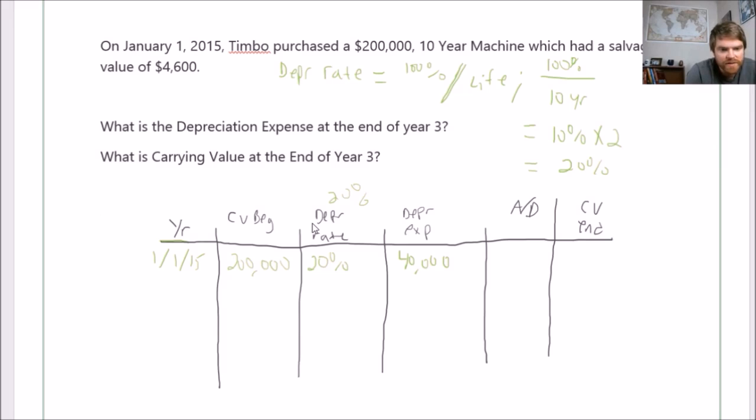Accumulated depreciation, well this is the first year so it's the same, nothing's accumulated yet really. Carrying value at the end of the year, all you do is $200,000 minus $40,000, so your carrying value at the end is going to be $160,000.